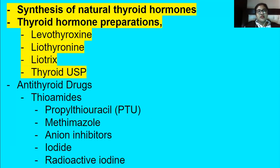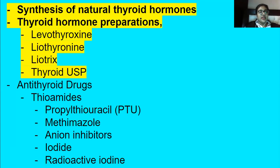The map of the lesson today: first we'll discuss the synthesis of natural thyroid hormone, then thyroid hormone preparations — how we stimulate the thyroid gland to produce more hormone or mimic its effect — and then anti-thyroid drugs, which inhibit over-secretion from the thyroid gland.